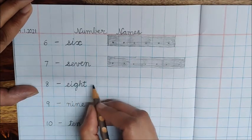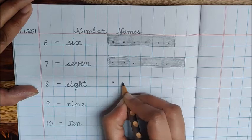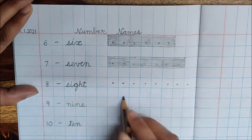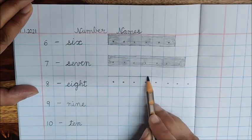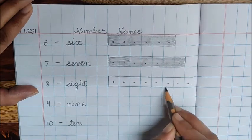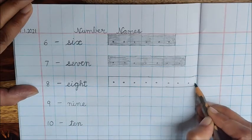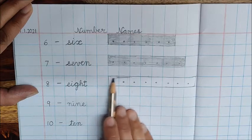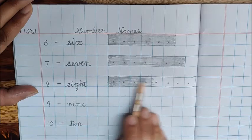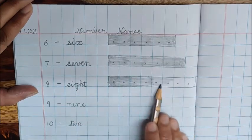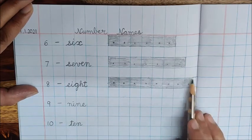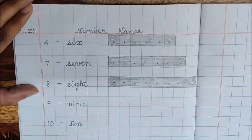Now next number is 8. Leave again 2 boxes. Now make 8 dots: 1, 2, 3, 4, 5, 6, 7, and 8. Now make the boundary first. Now shade these boxes. Do shading only inside the boxes, okay? Try not to move out of this boundary. This is also done.